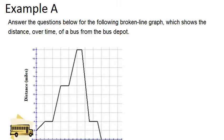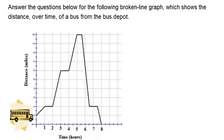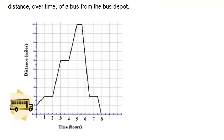Example A: Answer the questions below for the following broken line graph, which shows the distance over time of a bus from the bus depot. So the first thing that we see is this graph, and we can look at it.